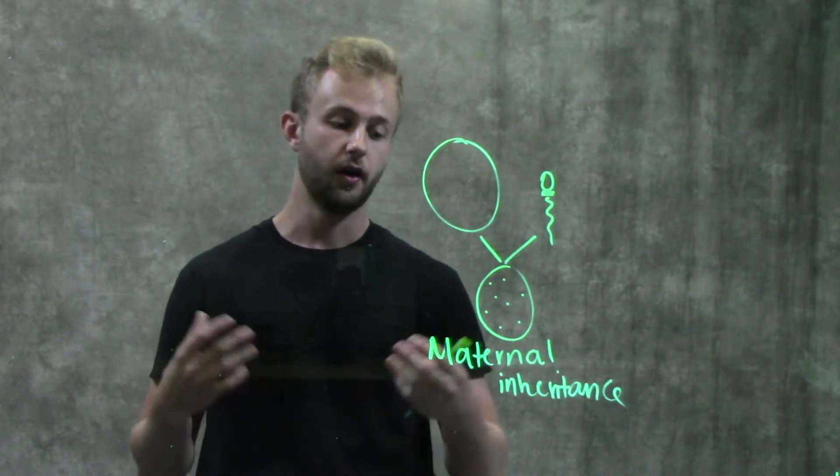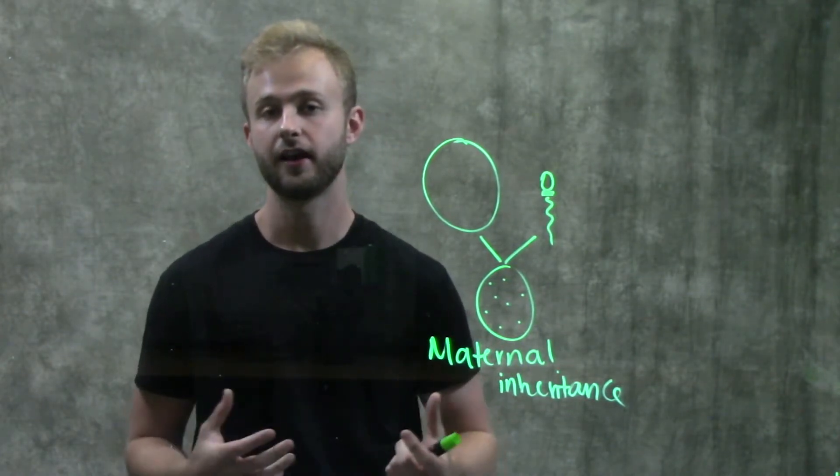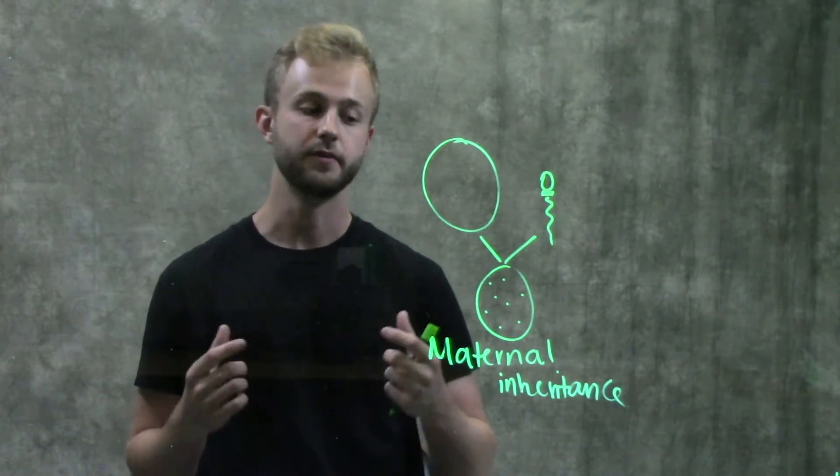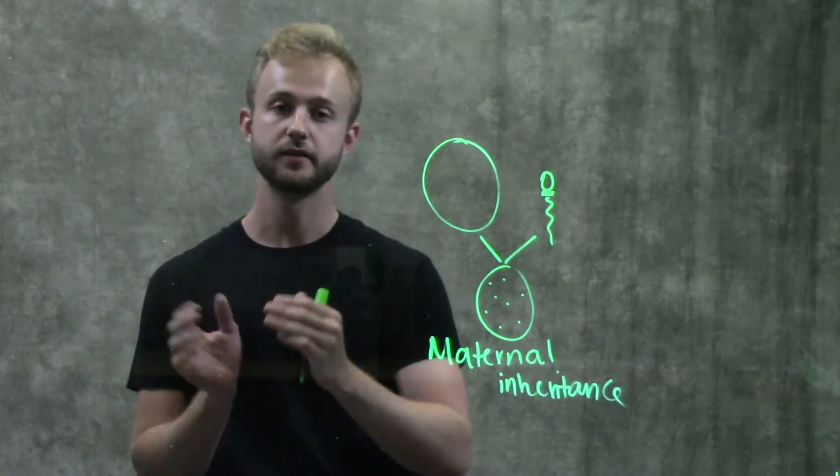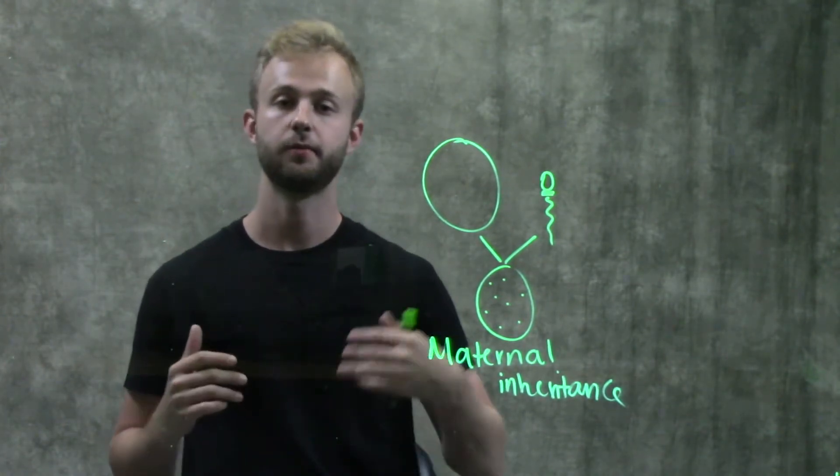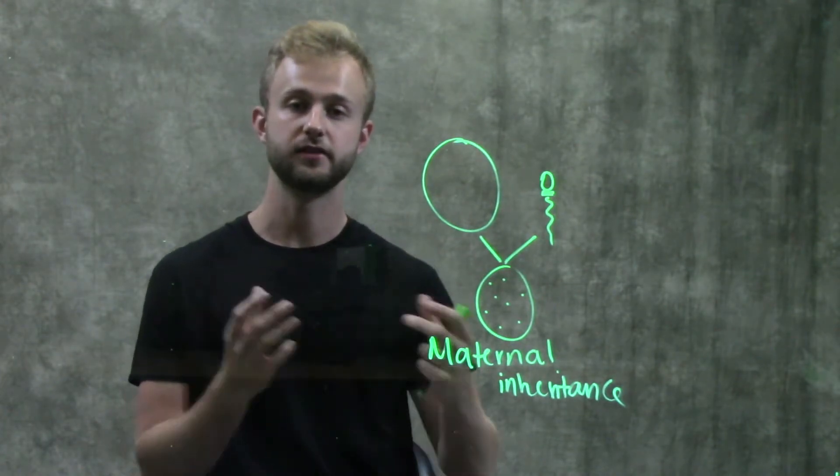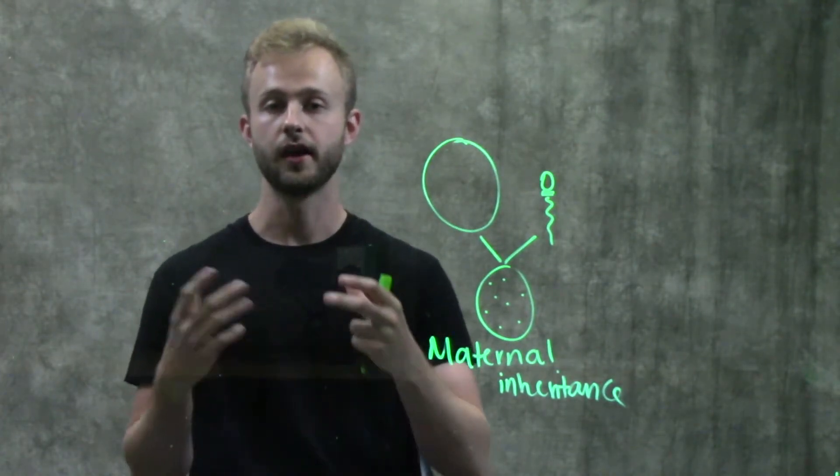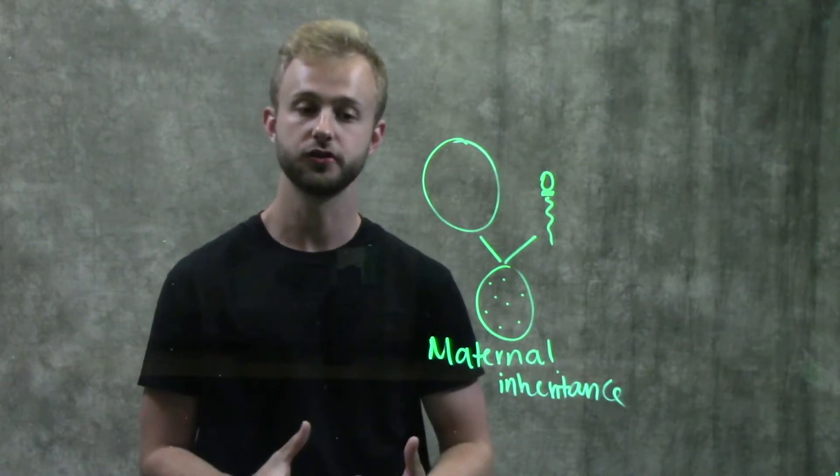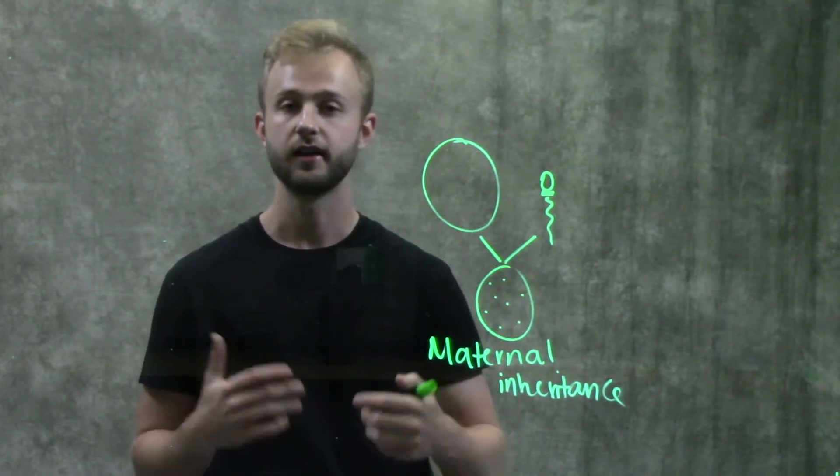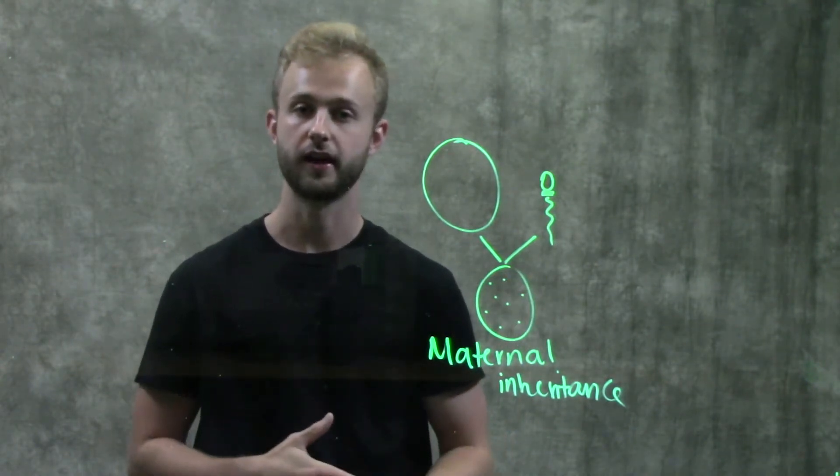To wrap everything up, we have the maternal inheritance of mitochondrial genes because the cytoplasm of the egg is so much larger than the cytoplasm of the sperm. When it gets donated to form this zygote, it brings along with it all of its mitochondria, and that's how these genes get passed down through maternal inheritance.